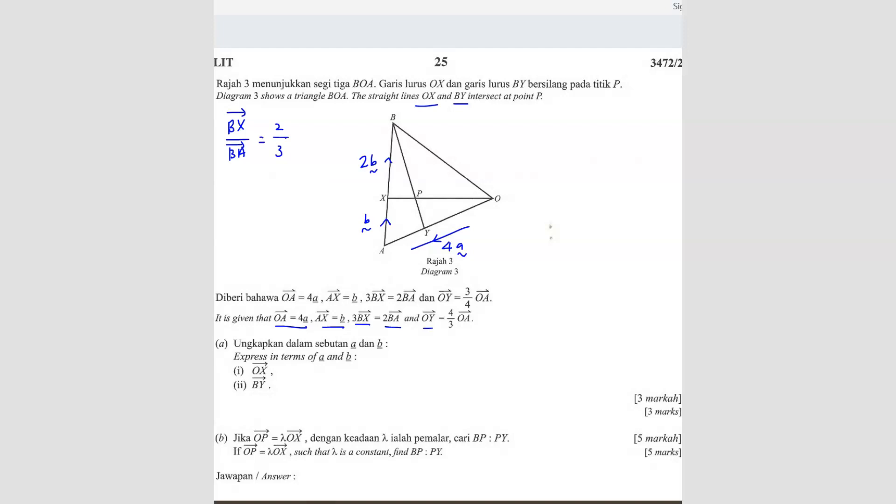OY equals to... there's some error. Because the question you see here, these two are different things. I think this one is wrong. It's supposed to be 3 over 4, not 4 over 3. Because if it's 4 over 3, it doesn't make sense.